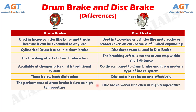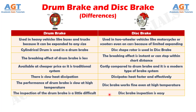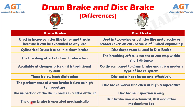Number 6: the performance of the drum brake is slow at high temperature, whereas the disc brake works fine even at high temperature. Number 7: the inspection of the drum brake is a little difficult, whereas disc brake inspection is easy. Number 8: the drum brake is operated mechanically, whereas in a disc brake we use mechanical, ABS, and other mechanisms too.